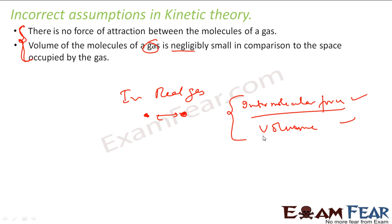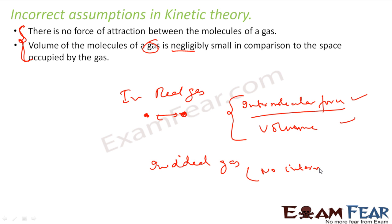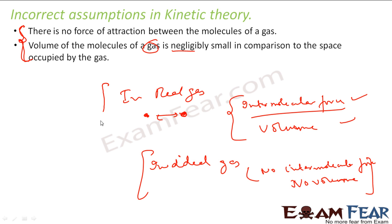These two incorrect assumptions explain why real gas deviates. In real gas, there is some intermolecular force and some volume occupied by the gas. But in ideal gas, there is no intermolecular force assumed, and no volume occupied. These two assumptions differ, and that is why we get different results for ideal gas and real gas.